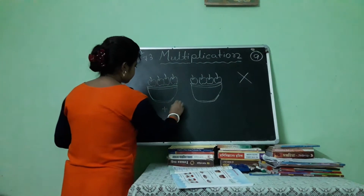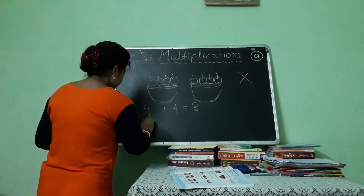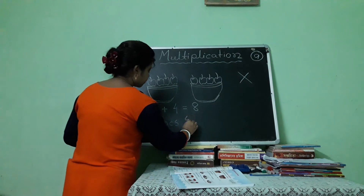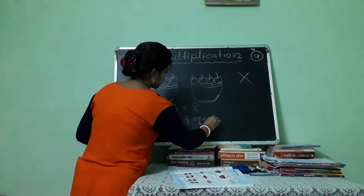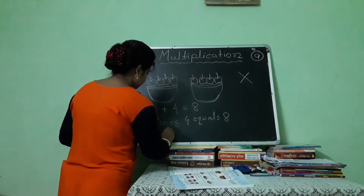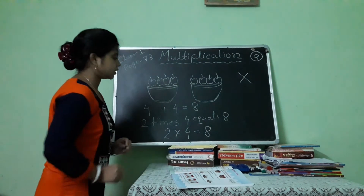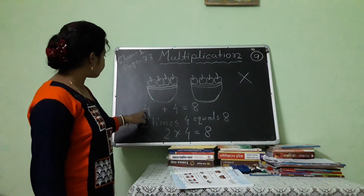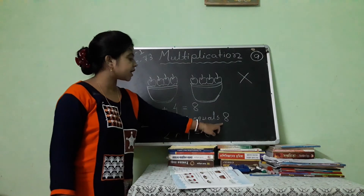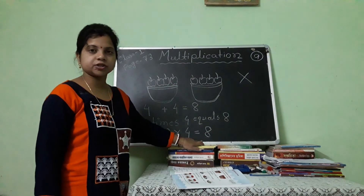So, 4 plus 4 equals 8, or 2 times 4 equals 8, or 2 into 4 equals 8. Hope you got my point.